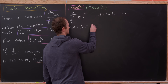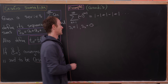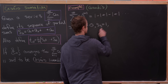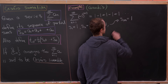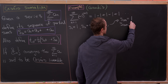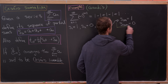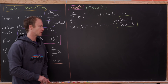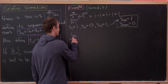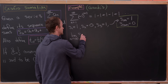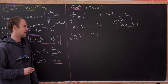The first partial sum is 1, the second partial sum is 0, and the third partial sum is 1 again. This means the odd partial sums are 1 and the even partial sums are 0. Since the sequence oscillates between 0 and 1, the limit as n goes to infinity of S sub n does not exist, because it never centers on a single value.